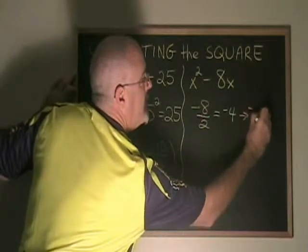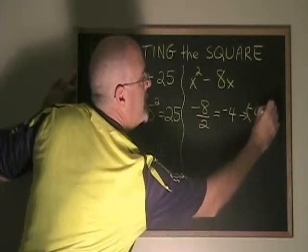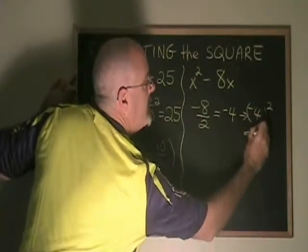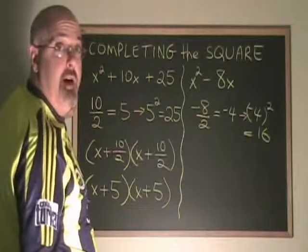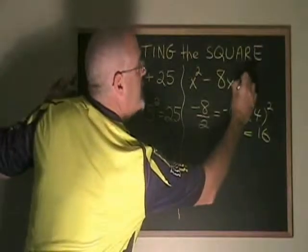If I square negative 4, I get positive 16. And that is the term that I write here, plus 16.